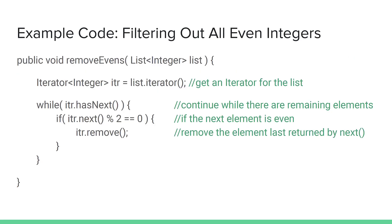This method provides a simple example of a filtering operation using the remove method. We take in a list of integers, explicitly get the iterator for that list, and set up a while loop. While the iterator's hasNext is true, we check if the value returned by iterator.next is an even number using modulus division. Whenever next returns an even number, we call iter.remove, which removes the last element returned by next. We never even store that value — we only use it for the modulus division, but iter.remove knows to remove the last element returned by next.